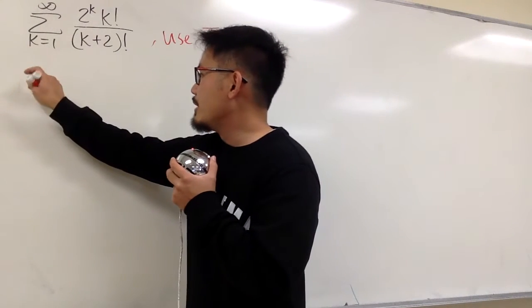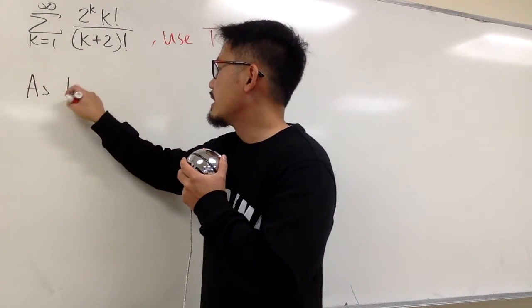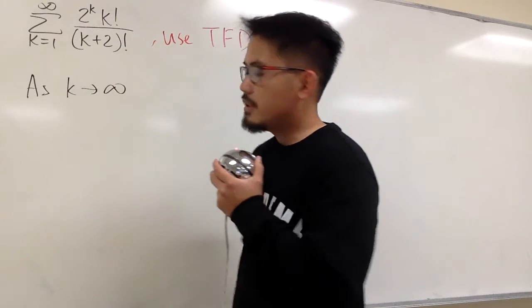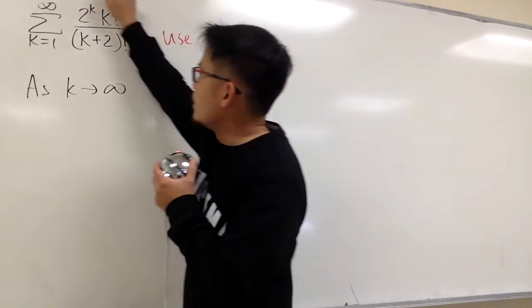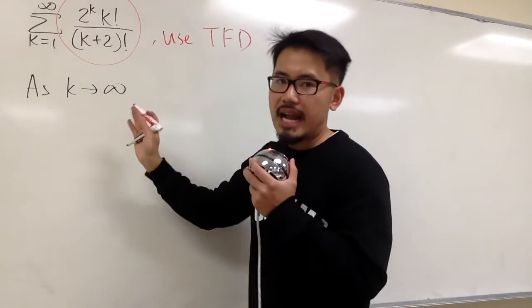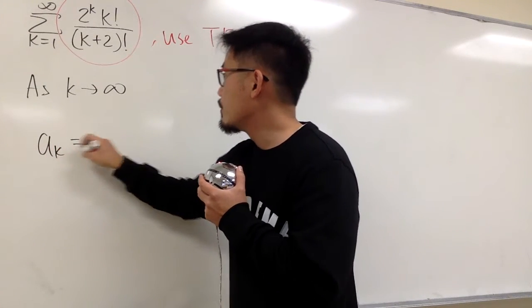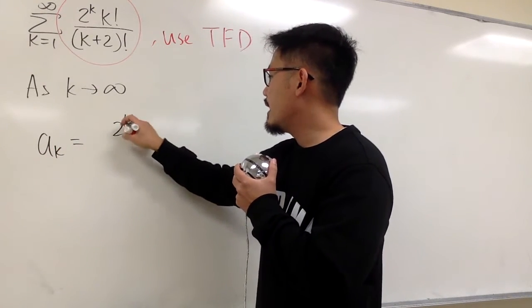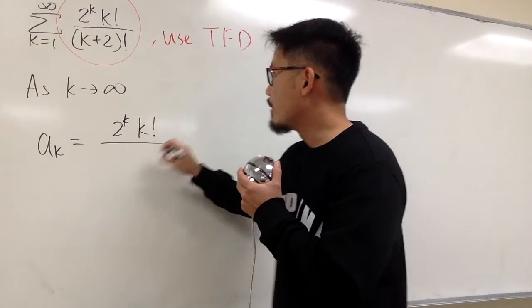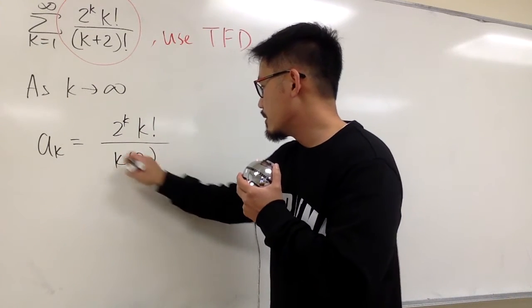To do that, I'm just going to take the limit as k goes to infinity, and then I will look at the original expression, which is just that. That's my ak, and I will put down ak right here, which is 2 to the k, k factorial, over k plus 2 factorial.